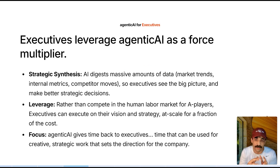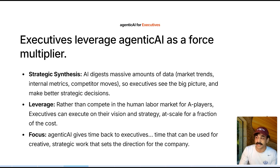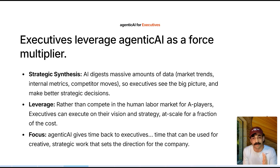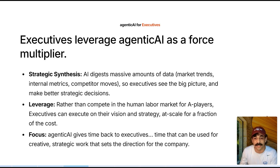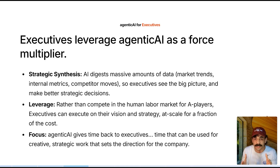Executives will leverage Agentic AI as a force multiplier. Strategic synthesis — obviously digesting massive amounts of data around the company, mapping out trends, doing internal metrics, maybe some external research to enrich the internal data — really just giving them better data, a bigger picture, more clarity and insight into what's going on in the business, so they can make better decisions.